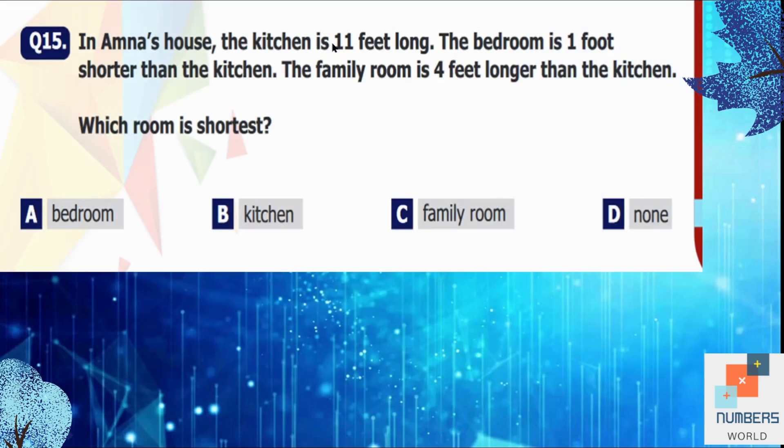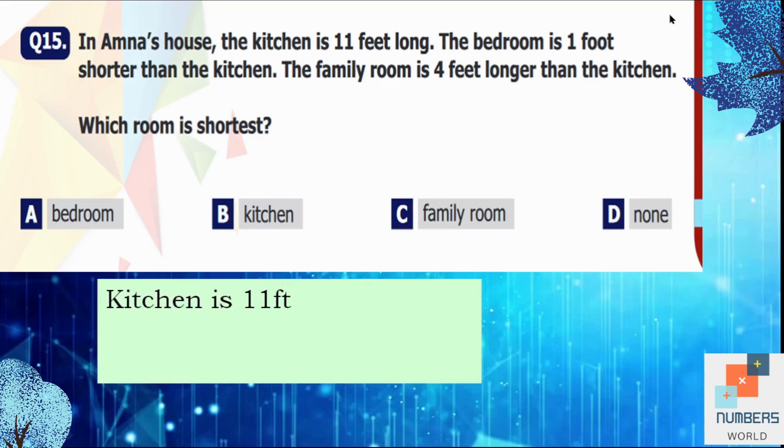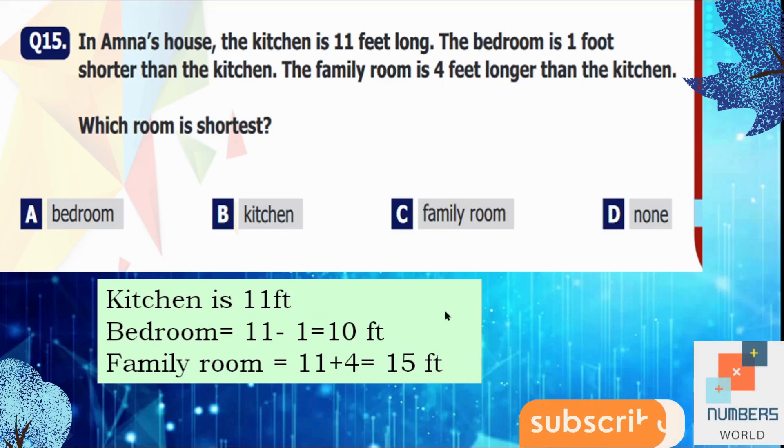Question number 15: In Amna's house, the kitchen is 11 feet long. The bedroom is 1 foot shorter than the kitchen. The family room is 4 feet longer than the kitchen. Which room is shortest? The length of the kitchen is 11 feet and the bedroom is 1 foot shorter than the kitchen. Shorter means we are going to subtract 1 out of the length of the kitchen which was 11. So 11 minus 1 is equal to 10 feet. The family room is 4 feet longer than the kitchen. So longer means plus, we are going to add 4 into the length of the kitchen. So 11 plus 4 is equal to 15 feet. So the family room is 15 feet bigger. So you can see that which is the shortest of all? It's the bedroom because bedroom is the smallest of all. So option A is the answer.